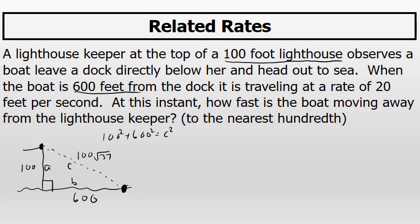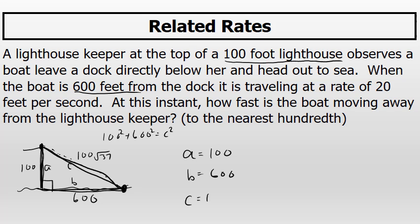To answer this question, which deals with the rate at which the boat is moving away from the lighthouse keeper, we have to discuss the rate of change of each side of this right triangle as time passes. We've been told that the rate of change of side B is 20 feet per second. We've been given specifically that A is 100, B is 600, and indirectly that C is 100 times the square root of 37.